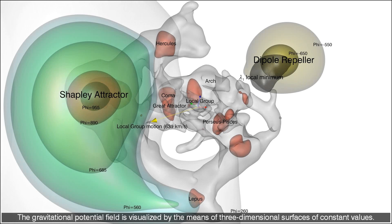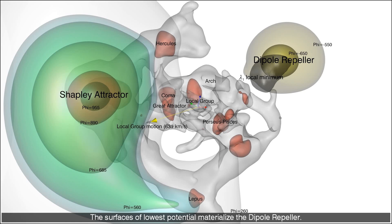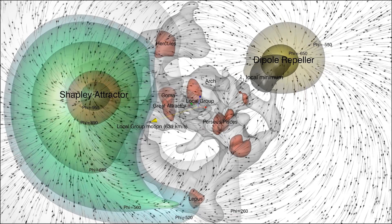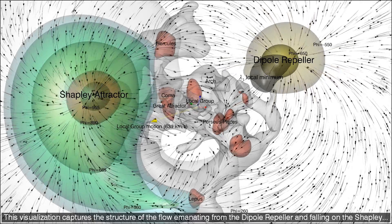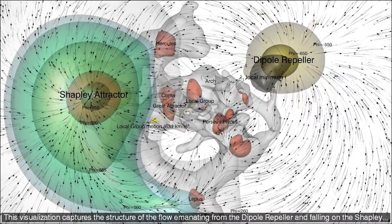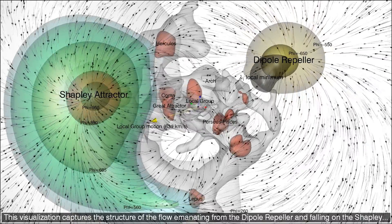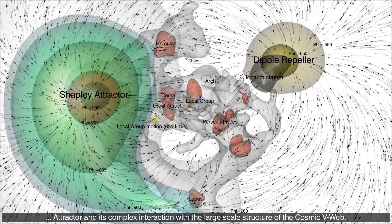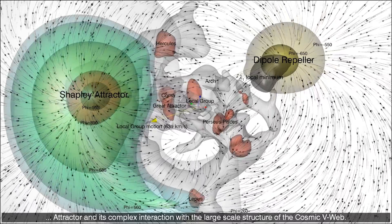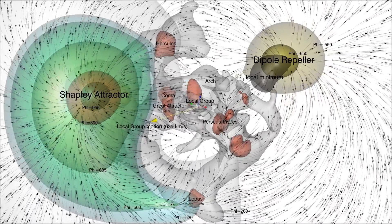The gravitational potential field is visualized by the means of three dimensional surfaces of constant values. The surfaces of lowest potential materialize the dipole repeller. Surfaces of highest potential materialize the Shapley attractor. This visualization captures the structure of the flow emanating from the dipole repeller and falling on the Shapley attractor, and its complex interaction with the large-scale structure of the cosmic V-web.